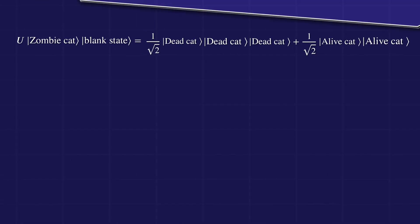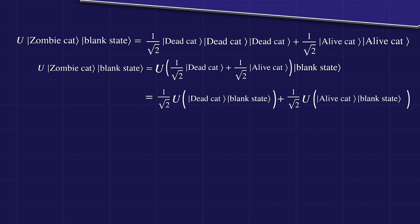But let's see what actually happens. We get this output state after passing the blank quantum state and the zombie cat state into the machine. One way to interpret this output state is by saying there is a 50% probability that both cats are dead or alive. If you open those two output boxes, both cats are dead or both cats are alive.